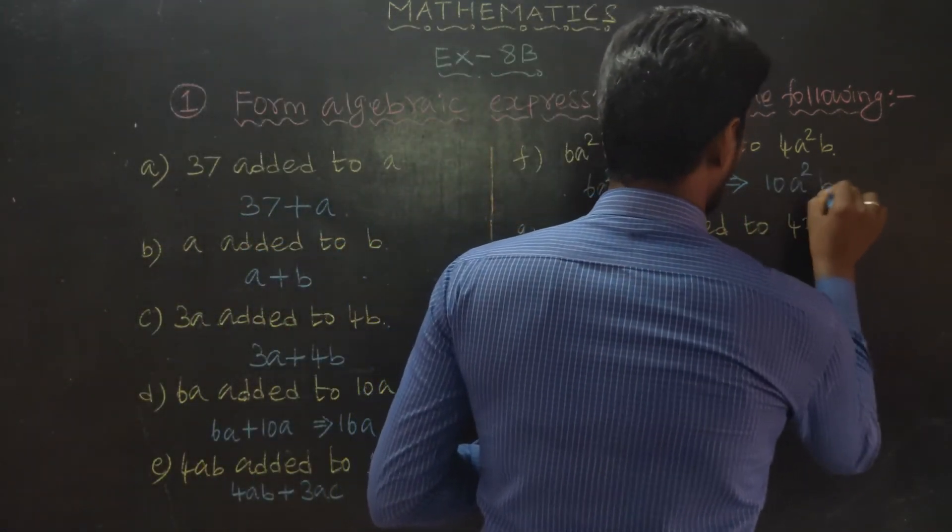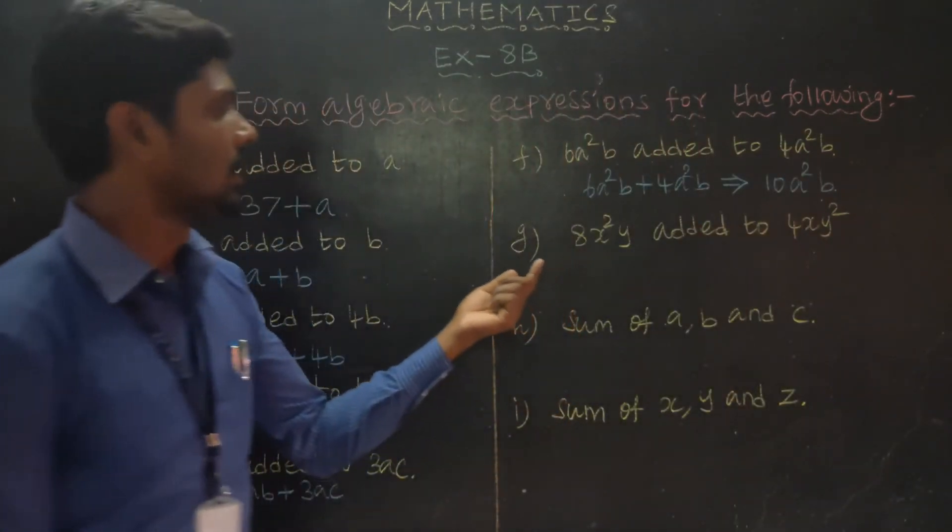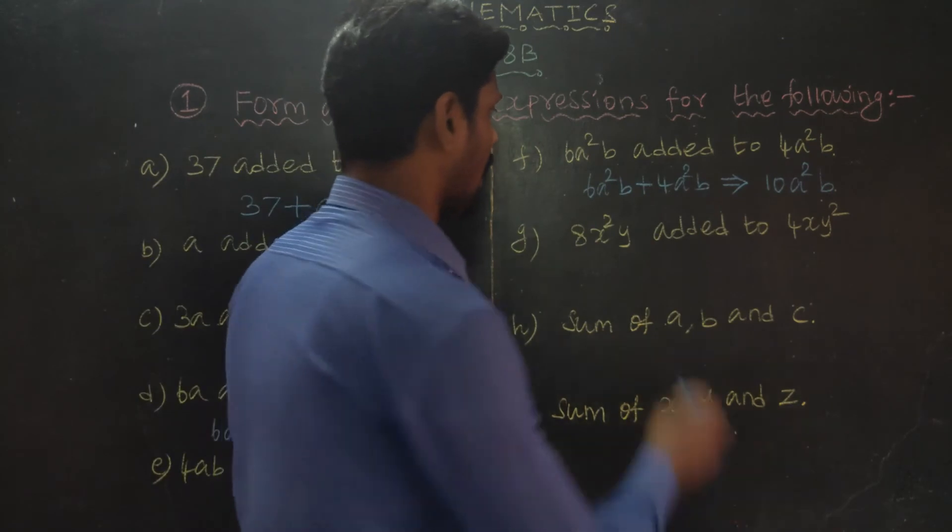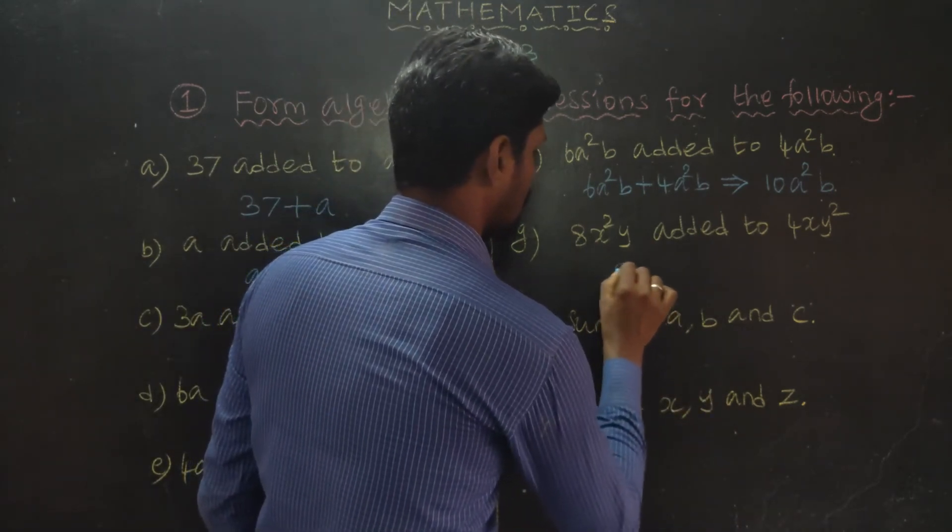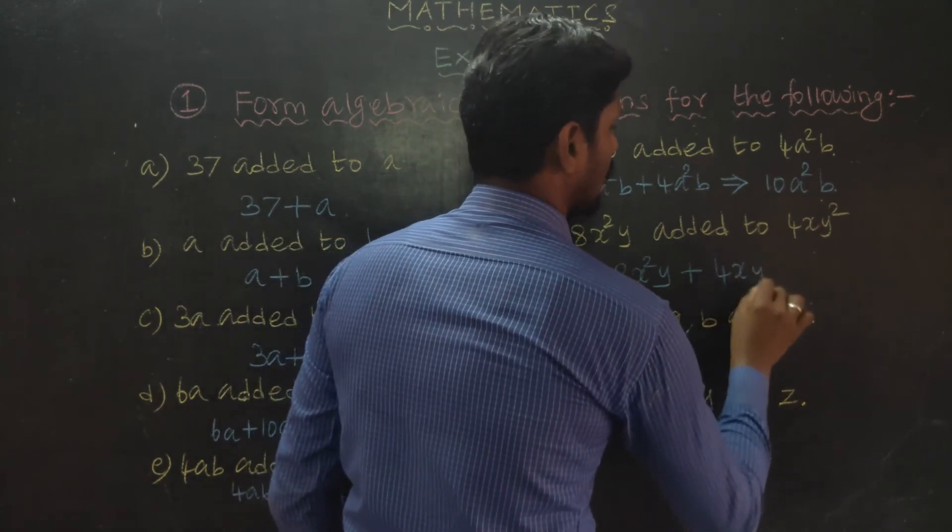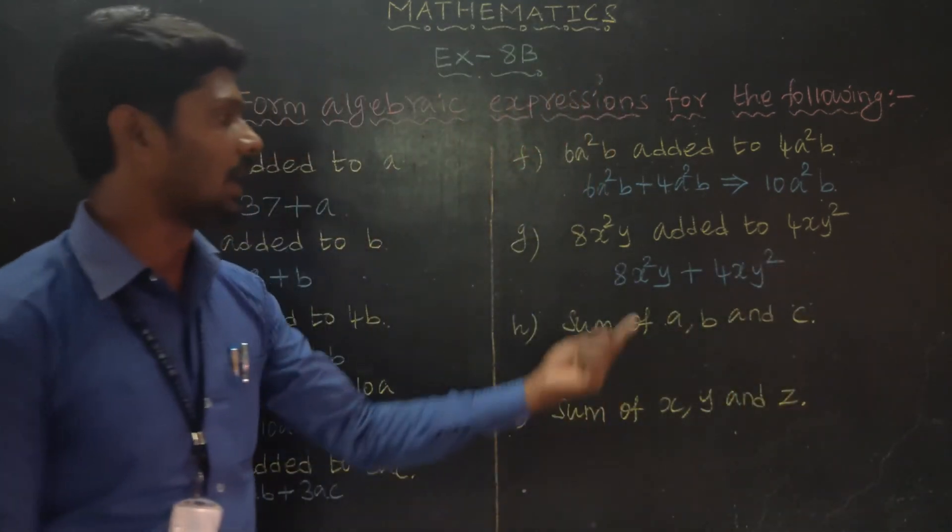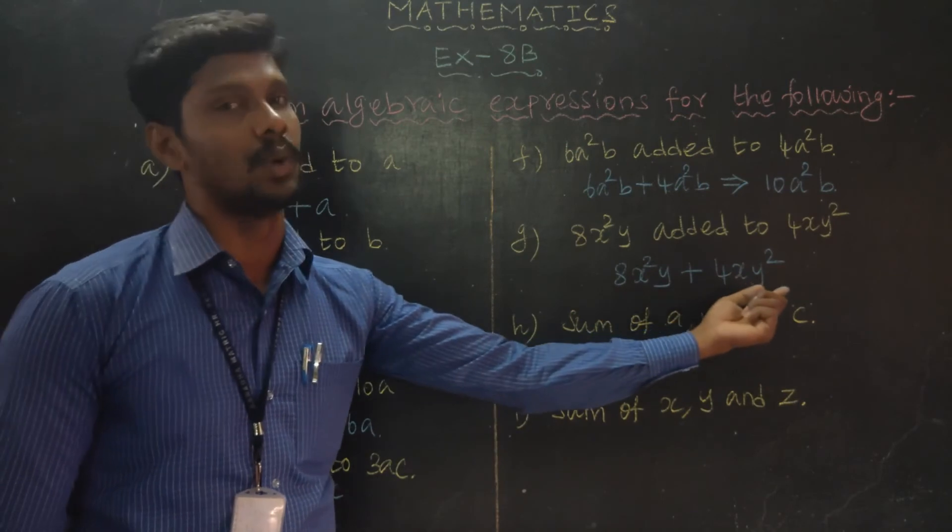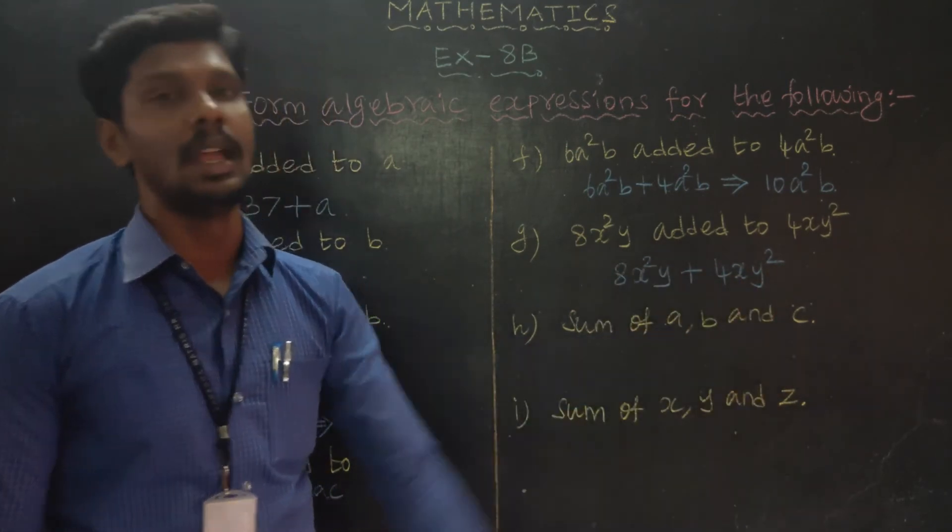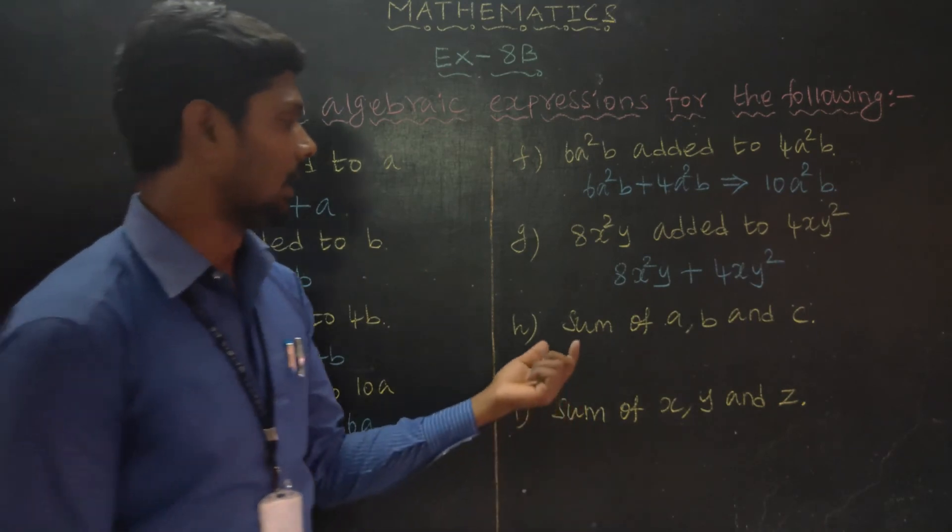Next, 1A squared Y added to 4XY squared. 1A squared Y plus 4XY squared. 2.5A squared B. This is a squared B, it's not a squared B. Sum...